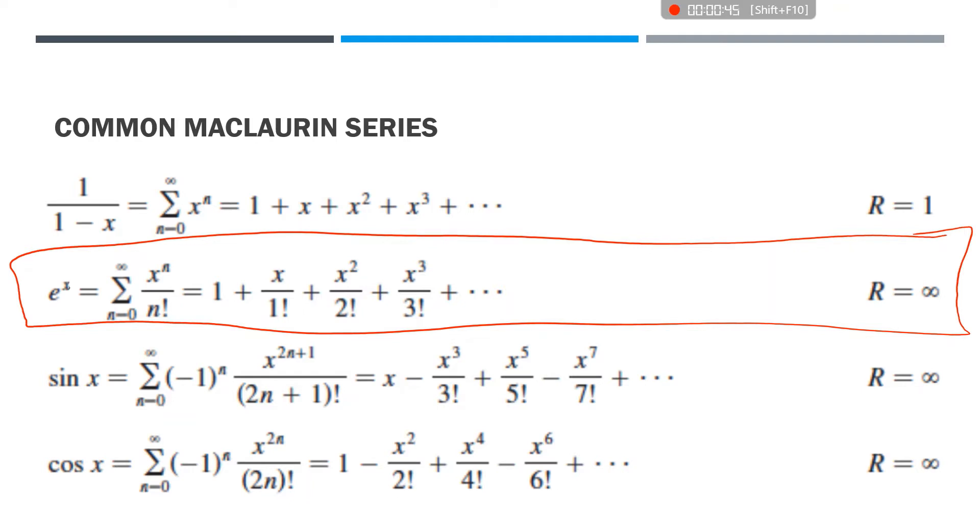The reason why we memorize these basic series is because we can manipulate them. If we change the input, we can change the input for all of these outputs. We can also multiply by a constant, divide by a constant, or even combine two of these. For instance, if I take this e to the x, I can multiply every term by 100, and that would factor all the way through. I could change my input from x to maybe 1 over x, and that would replace x with 1 over x for all of these outputs.